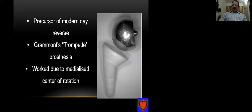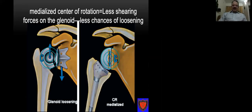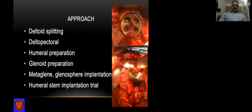This is the precursor of the modern-day Grammont prosthesis, called the trumpet prosthesis, which worked due to medialization of the center of rotation. The deltoid elevation torque — a product of the moment arm and force — is far less in rotator cuff-deficient shoulders due to superior migration of the humeral head. In reverse shoulder, the moment arm (l2) and force (f2) are both increased due to medialization and lowering of the center of rotation, so the deltoid elevation torque is far better. Additionally, there are less shear forces acting on the glenoid, which means less chance of glenoid loosening.